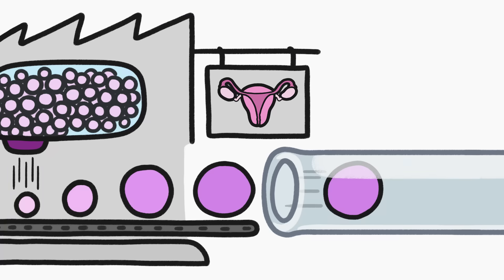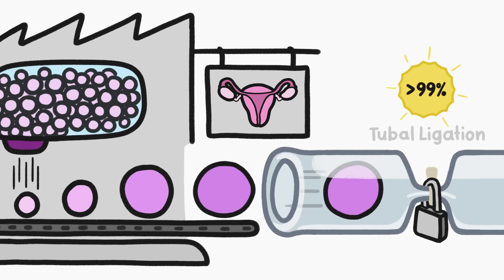You can also block the egg's path via a tubal ligation, a.k.a. getting your tubes tied. This surgery is more than 99% effective at preventing pregnancy, though it's hard to reverse. So it's usually used by people who are sure they don't want to get pregnant anymore.